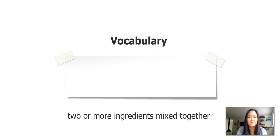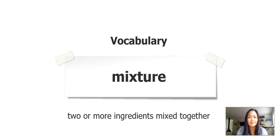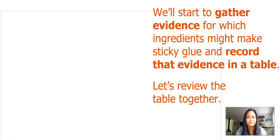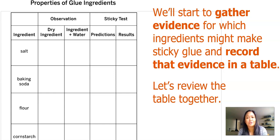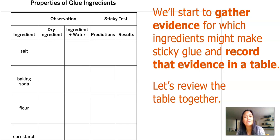Another vocabulary word is mixture — two or more ingredients mixed together. We're going to use this table for the next lesson. This table is called properties of glue ingredients, and it will be used to gather evidence for which ingredients might make sticky glue. On the left-hand side, there are four ingredients you would use: salt, baking soda, flour, and cornstarch.